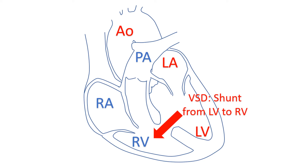In case of ventricular septal defect, the shunt is from the left ventricle at higher pressure to the right ventricle at lower pressure. Pulmonary blood flow is high in a large ventricular septal defect with left-to-right shunt. The extra blood flow due to the shunt returns to the left atrium and then to the left ventricle.